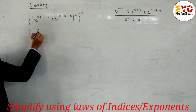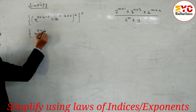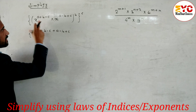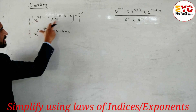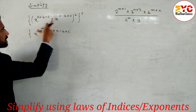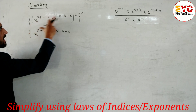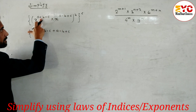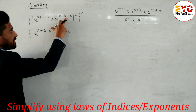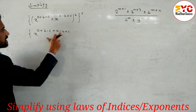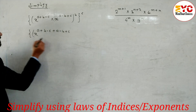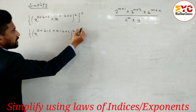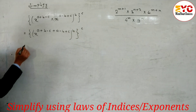The expression is x^(a+b-c) times x^(a-b+c) times x^b times x^c. Since the base is the same, in multiplication we have to add the powers. The powers are a+b-c and a-b+c, and the whole powers are b and c.